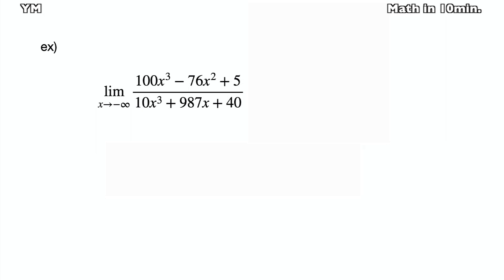The next tip is when solving fraction forms of polynomials. When x goes to positive or negative infinity, just focus on the greatest degrees on each part. The other parts of lower degrees are negligible. If the greatest degrees of denominator and numerator are equal, then we can calculate just with their coefficients. So the answer equals 100 divided by 10, which is 10.